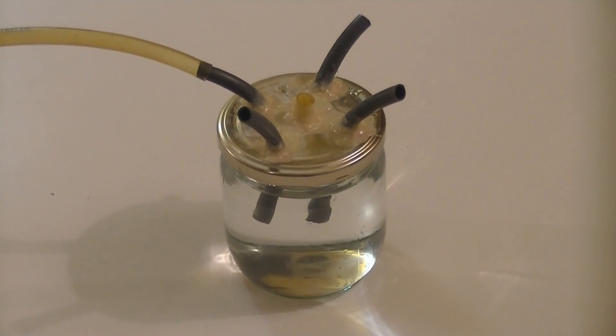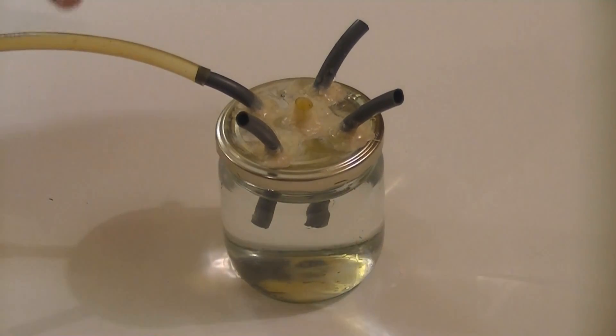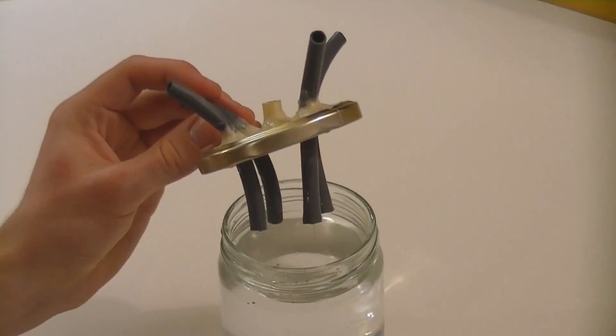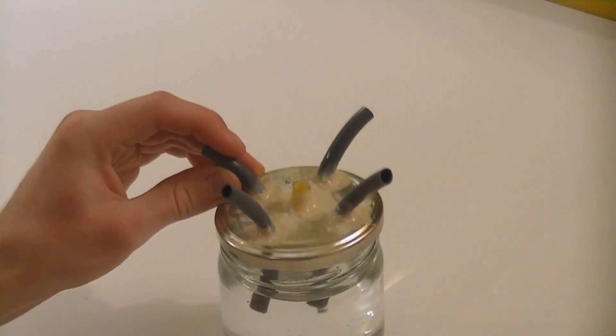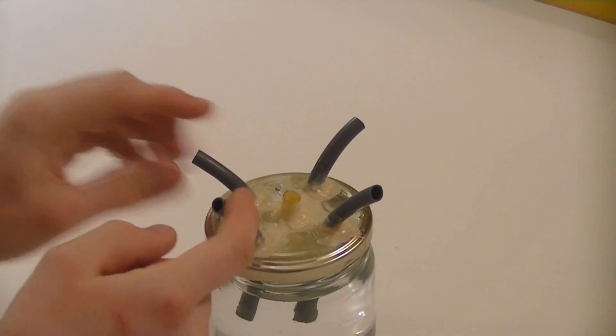You must build a bubble flashback arrestor where the gas production of each cell meets. If ever the gas were to burn in the outlet, the explosion wouldn't be able to reach the electrolyzers. This way, they are all protected.